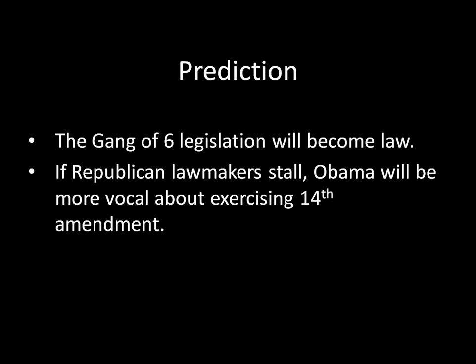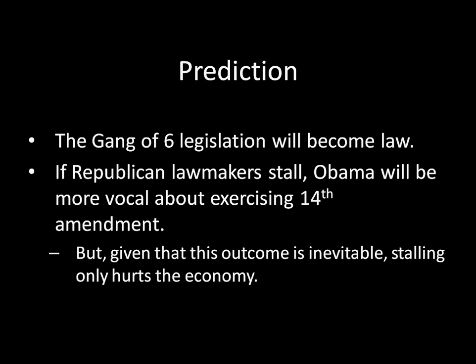So the outcome of this game is for the Republicans to pass the Gang of Six legislation and for Obama to sign the bill into law. My prediction is the following: the Gang of Six legislation will become law, and if Republican lawmakers continue to stall, Obama will be more vocal about exercising the 14th Amendment option, essentially forcing the Republicans' hand and pushing them toward compromise because they don't want the United States to go bankrupt. It's also worth noting that because this outcome is sort of inevitable anyway, stalling is only going to hurt the economy and increase uncertainty. All of this posturing on Capitol Hill really benefits no one — they should just go through this compromise and get it over with. That's my prediction; I think it's the good bipartisan thing to do and probably the best outcome possible for the country as a whole. We'll see if that actually happens.